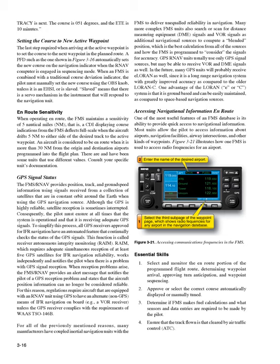Most units allow the pilot to access information about airports, navigation facilities, airway intersections, and other kinds of waypoints. Figure 3-21 illustrates how one FMS is used to access radio frequencies for an airport. Essential Skills: 1. Select and monitor the on-route portion of the programmed flight route, determining waypoint arrival, approving turn anticipation, and waypoint sequencing. 2. Approve or select the correct course automatically displayed or manually tuned. 3. Determine if FMS makes fuel calculations and what sensors and data entries are required to be made by the pilot. 4. Ensure that the track flown is that cleared by air traffic control (ATC).